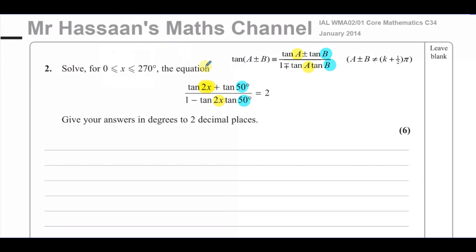Okay, so we can think about this in our formula. If we compare them, A in the formula is the 2x in our question, and the B in the formula is like the 50 degrees in our question.